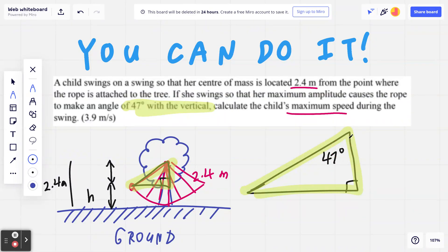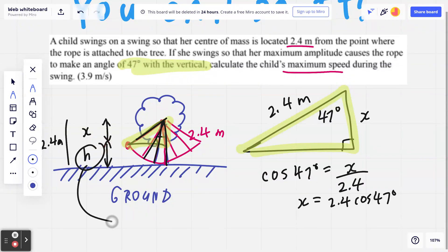This angle is 47 degrees. This is still going to be 2.4 meters - remember this is 2.4, 2.4, 2.4. Let's say this is going to be x, which means this is going to be x. If you think about cosine, which basically means adjacent over hypotenuse, cosine of 47 degrees is exactly x divided by 2.4. So x equals 2.4 cosine of 47 degrees, which we'll come back to.